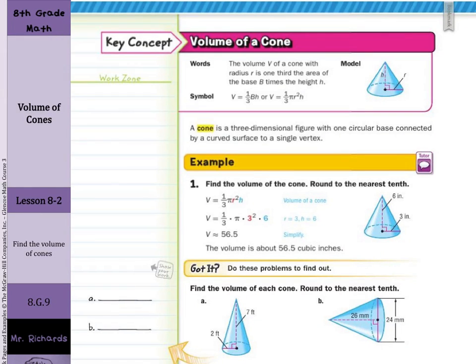And so our key concept — volume of a cone: the volume V of a cone with radius r is one-third the area of the base B times the height h, which is what we just discovered. So one-third times pi r squared gets us the area of the base. A cone is a three-dimensional figure with one circular base connected by a curved surface to a single vertex.